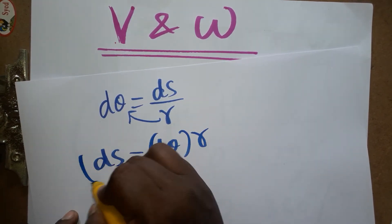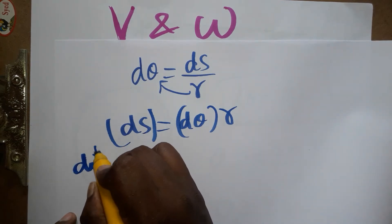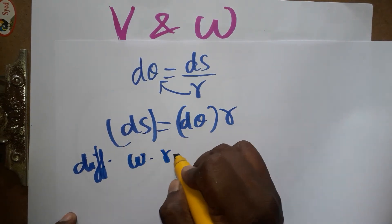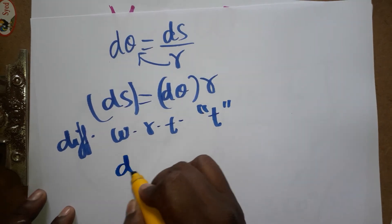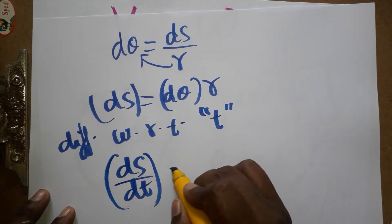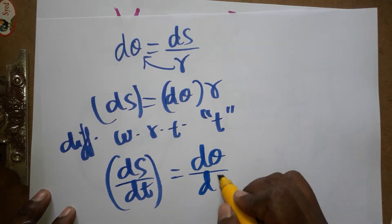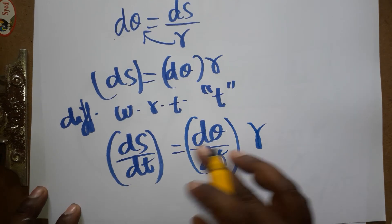This equation I am going to differentiate with respect to time. Differentiating with respect to time: displacement by time is linear displacement by time, angular displacement by time times radius. Linear displacement by time is velocity, angular displacement by time is angular velocity times radius.